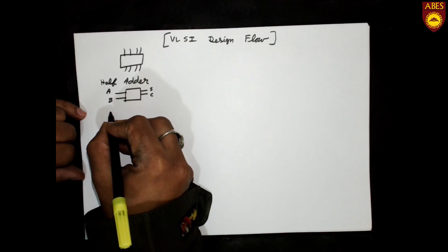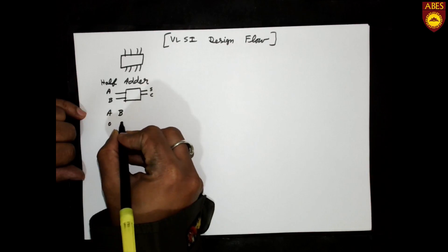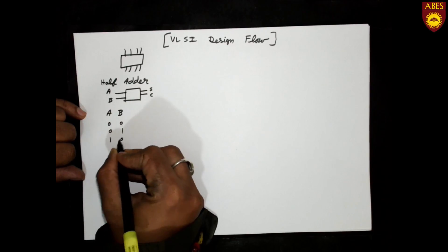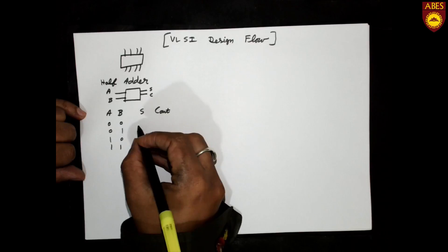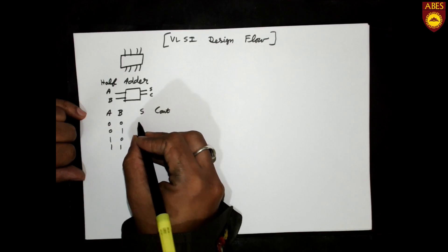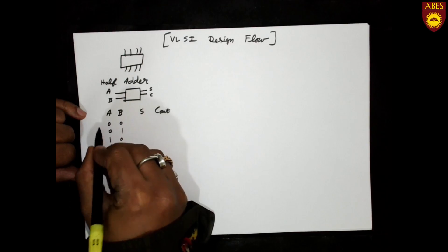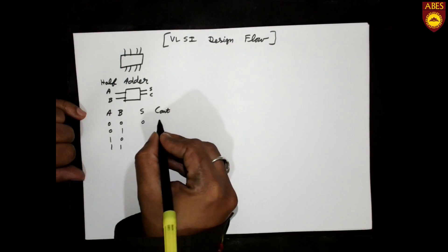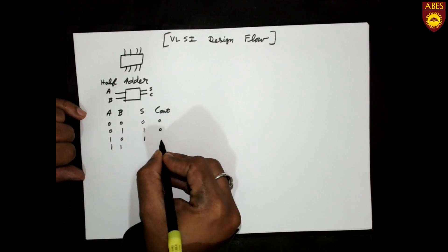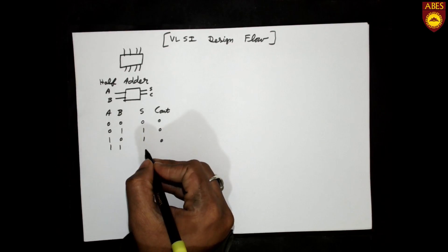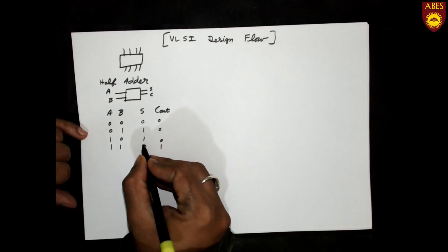The second step is to write the truth table for the two inputs covering all conditions: 0-0, 0-1, 1-0, and 1-1, and determine what the sum and carry will be for each. In this step, we are describing the behavior of the circuit — for example, if both inputs are 0, sum is 0 and carry is 0; if both are 1, sum is 0 and carry is 1.